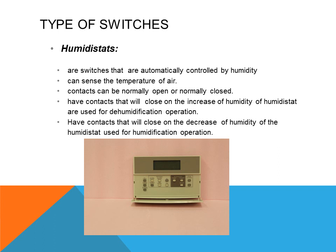A humidostat is a type of control that senses the humidity in a room to turn the humidifier on and off. It works very similarly to a thermostat but senses humidity only, opening and closing contacts through a hygroscopic material that expands or contracts based on humidity.